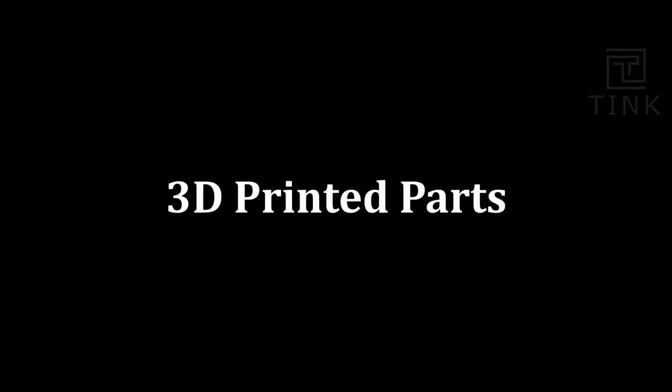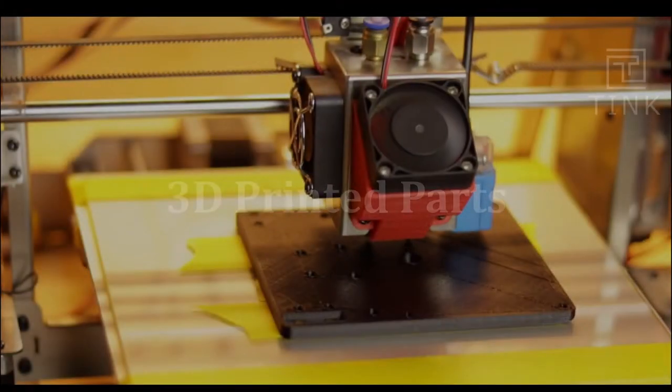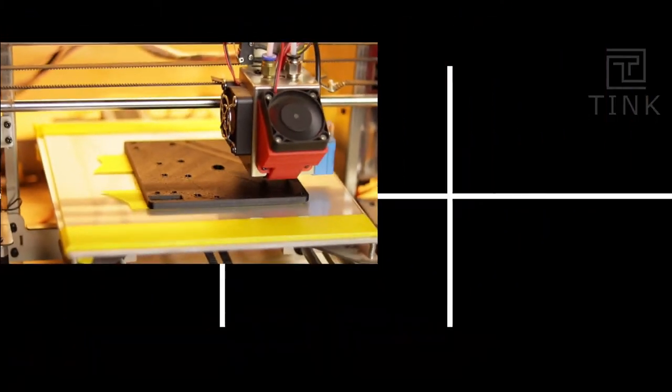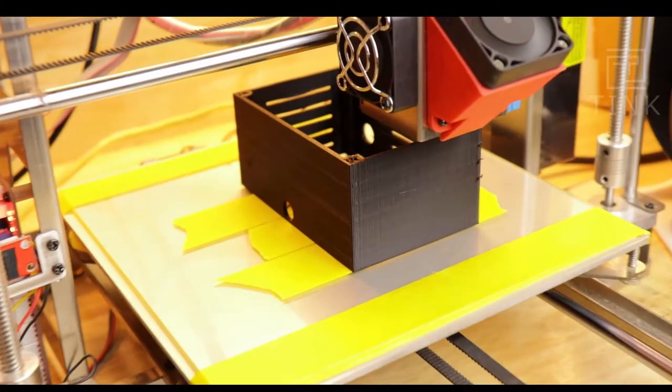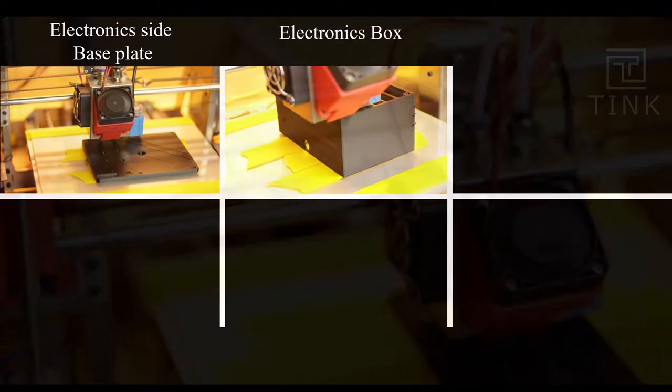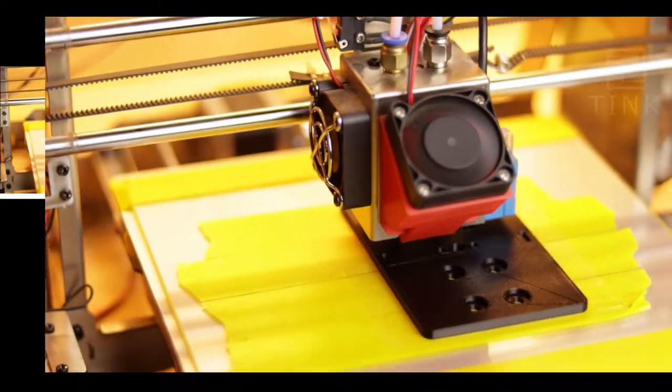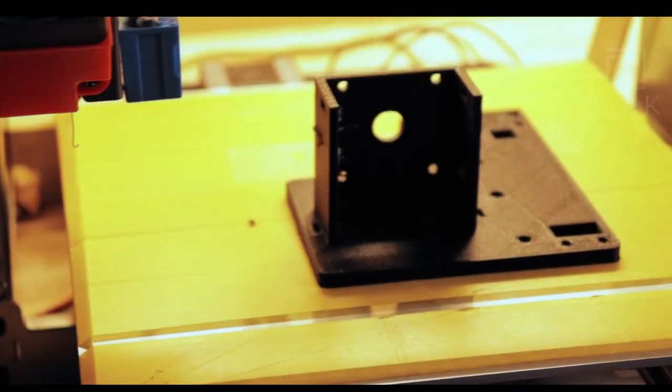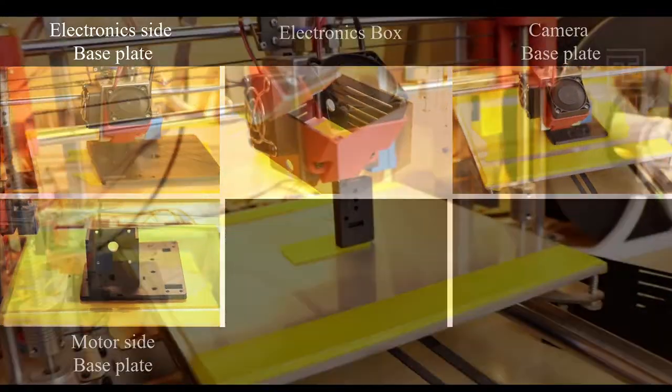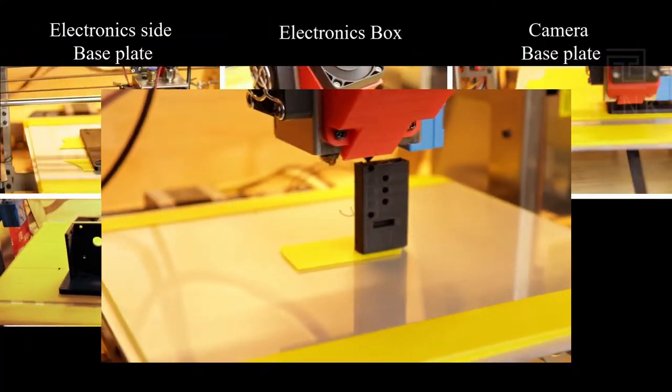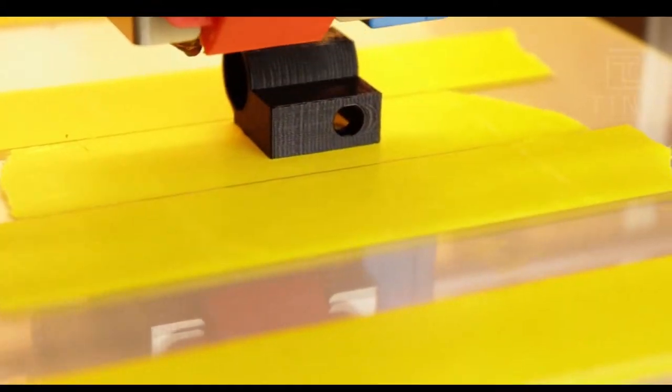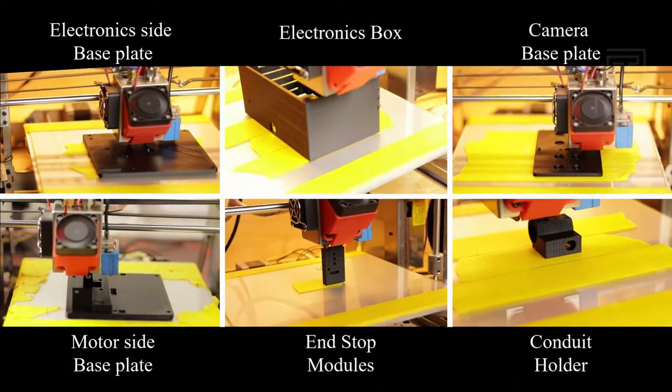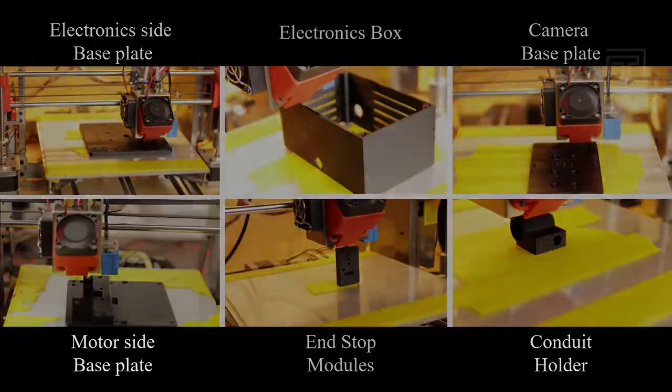Okay, to start with, I am going to 3D print all the necessary parts. First, the electronic base plate, then the box for holding the electronics. Base plate for the camera, then the base plate for the motor, end stop modules, and finally a couple of conduit holders that I will be using to fix the wire concealing conduits.